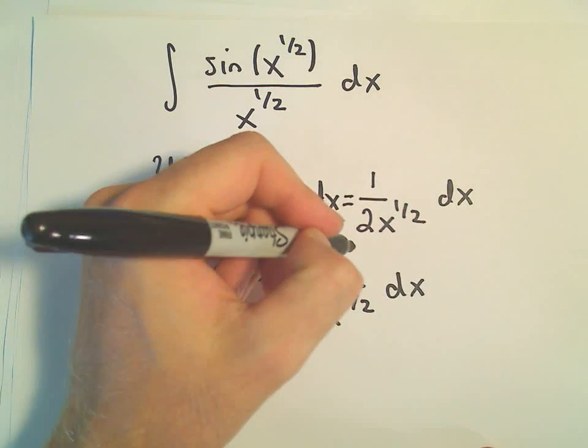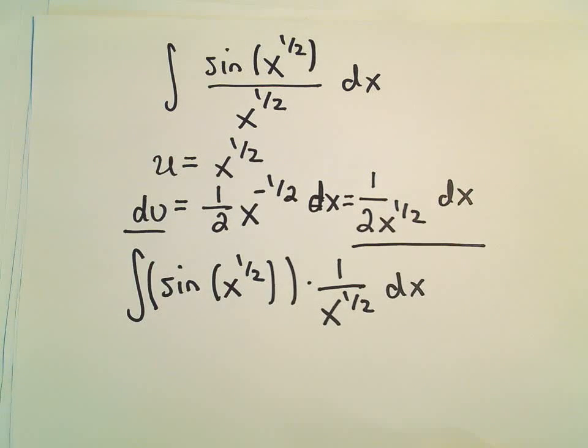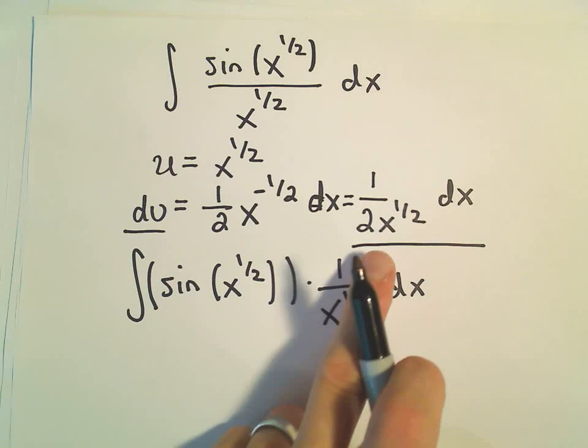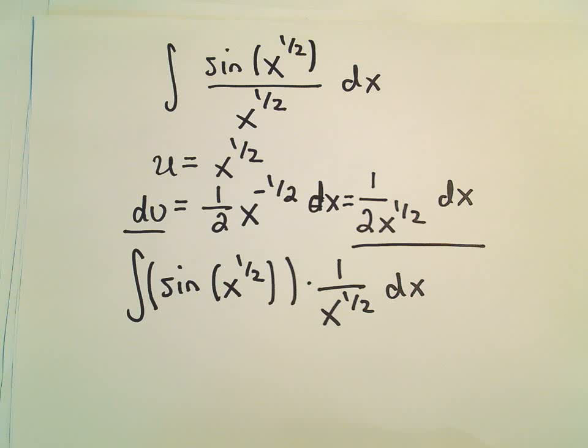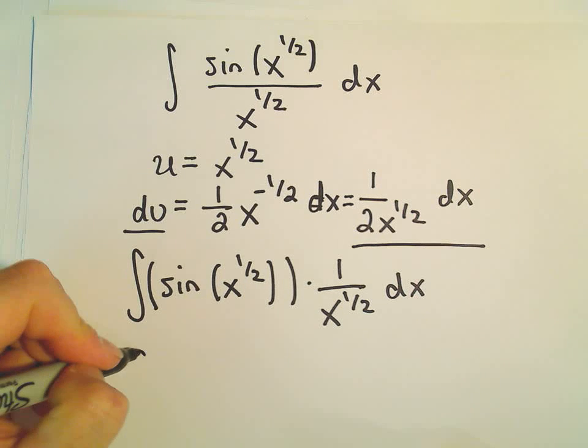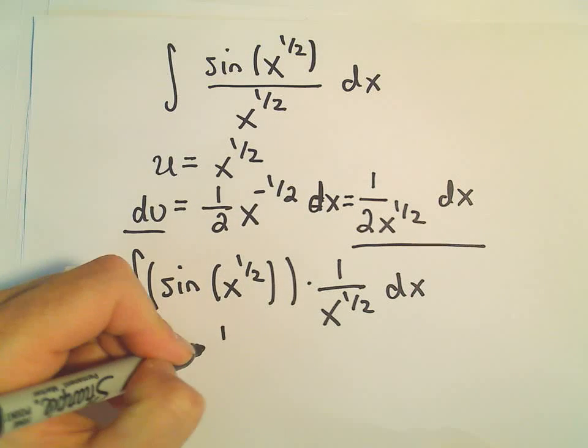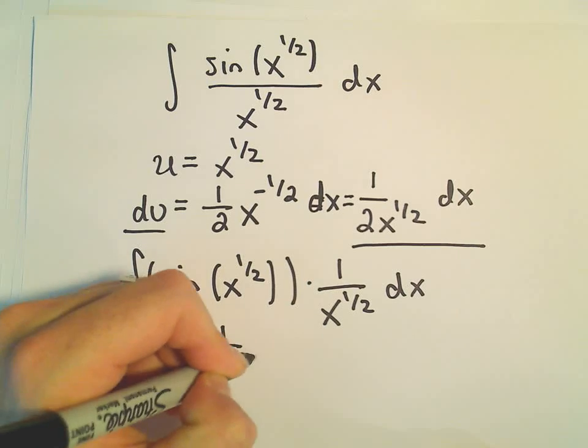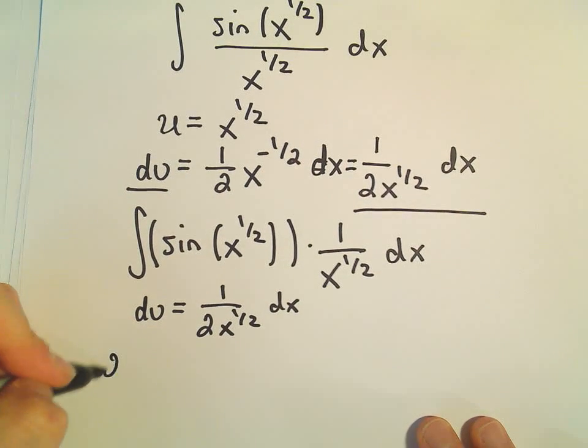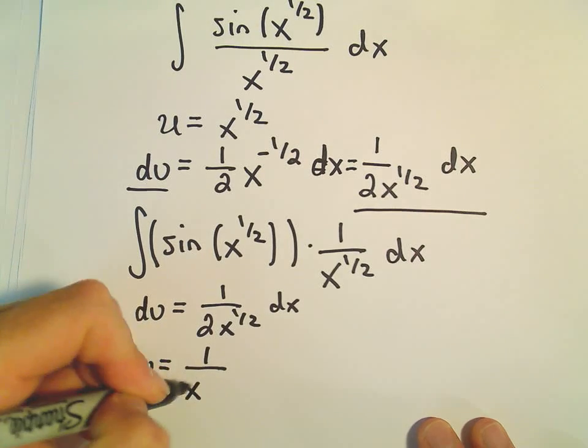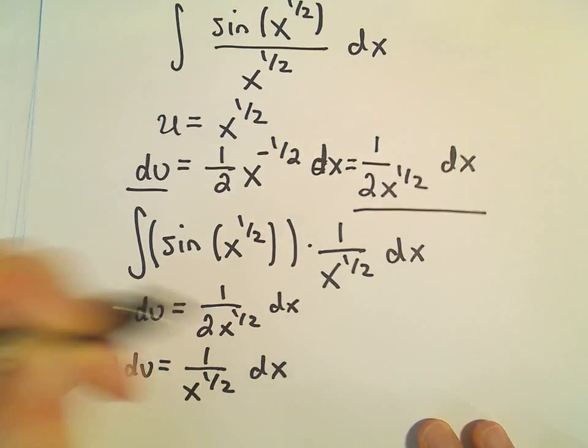So, it says du is going to equal 1 over 2 x to the 1 half dx. Well, to get the 1 over x to the 1 half by itself, we could just multiply both sides by 2. So we've got du equals 1 over 2 x to the 1 half dx. So if we multiply both sides by 2, we'll get 2 du equals 1 over x to the 1 half dx.